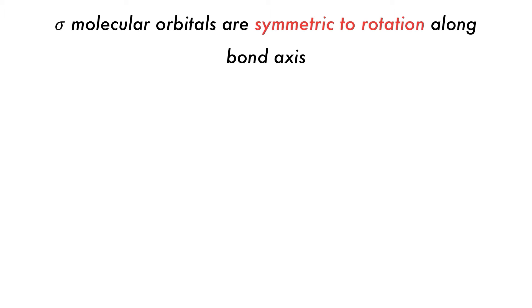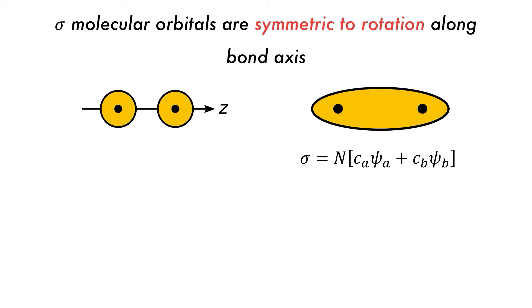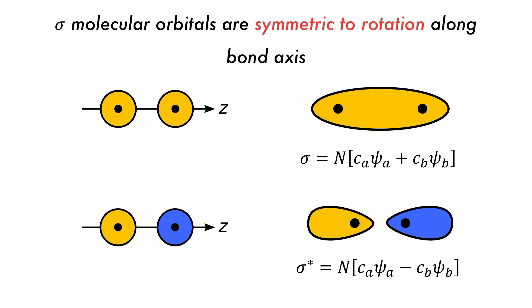Why are some interactions called sigma and some pi? Sigma interactions are symmetric towards rotation along the bonding axis. If there are two in-phase S orbitals, they will overlap to form a sigma bonding molecular orbital. N in the equation is a normalization factor. If the two S orbitals are out of phase, then the overlap will be destabilizing, giving a sigma star anti-bonding orbital. If these orbitals are then rotated around the Z axis, or the bonding axis, they will not change, confirming that they are sigma orbitals.